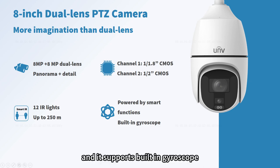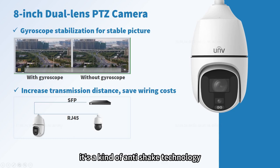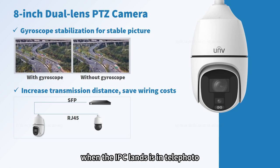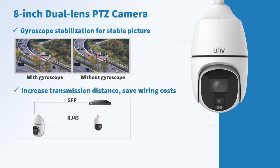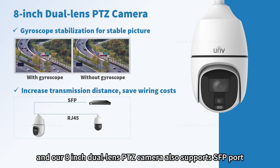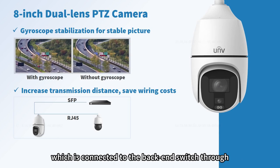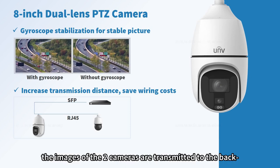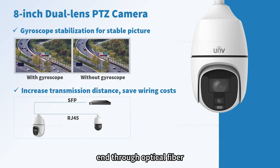The 8-inch dual-lens PTZ also supports a built-in gyroscope — an anti-shake technology used when the image jitters during telephoto or high-altitude installation — ensuring stability of the output video. It also supports an SFP port connected to the back-end switch through optical fiber, and a spare RJ45 port can be connected to another IPC through a network cable. The images of both cameras are transmitted to the back-end through optical fiber, saving extra wiring costs.